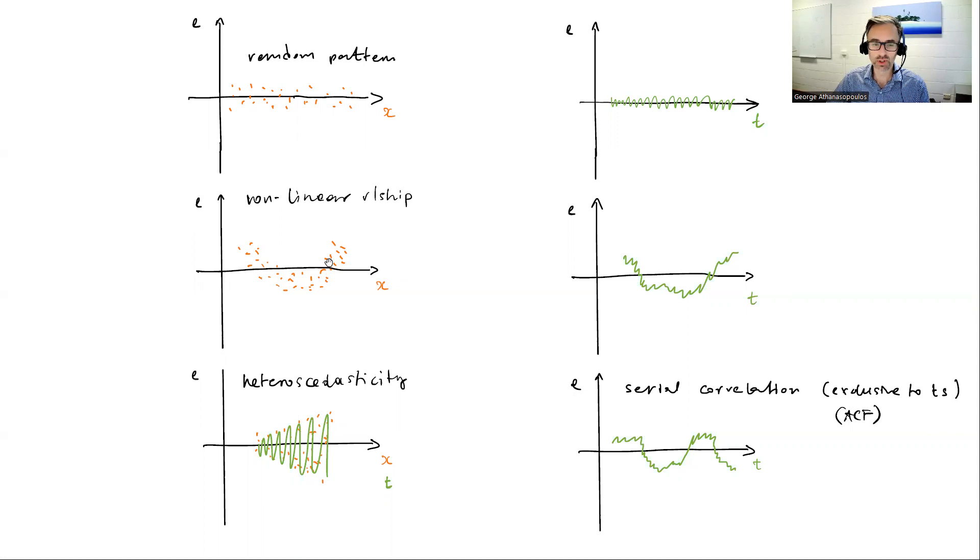If I plotted my residuals against some predictor and I find some nonlinear relationship, then I need to do something and deal with it. So if I see some pattern like this, then I'm thinking about nonlinear relationships. Again, if I plot the residuals against time and I see something like this, again, I'm thinking about some nonlinear relationship.